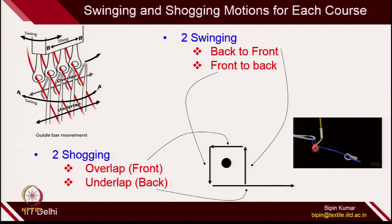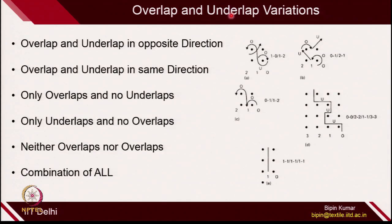This is what we learned in previous classes. Between every overlap and underlap, there is 1 swinging motion: 1 swinging, 1 shogging, 1 swinging, 1 shogging — swinging and shogging motions happen alternately. This is very important in warp knit design. In the last class I gave more emphasis on the shogging motion, because depending on what type of shogging motions you achieve, you can go for different types of warp knit structures. Overlap and underlap are the 2 main shogging motions.